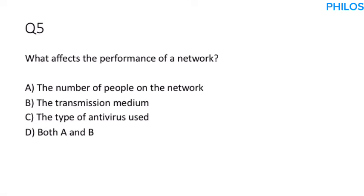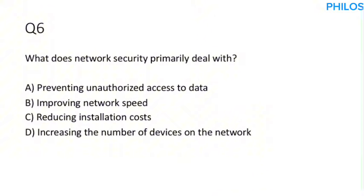Question five: What affects the performance of a network? Option A, the number of people on the network, is true. Option B, the transmission medium, is also true. Option C, the type of antivirus used, is not true. Since both A and B are true, the correct answer is option D: both A and B.